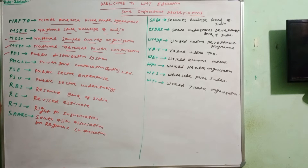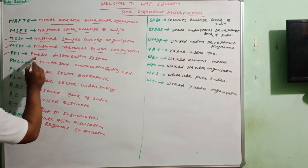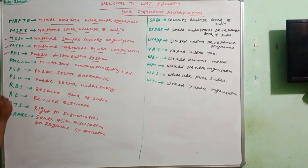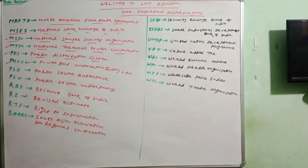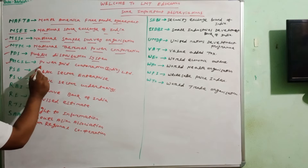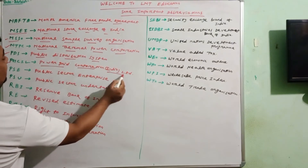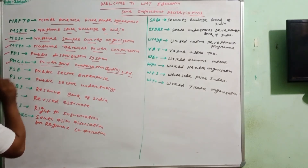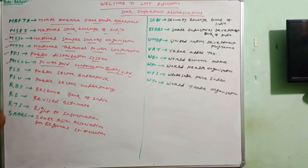PDS means Public Distribution System — it is a very important and widely used term. PGCIL means Power Grid Corporation India Limited.